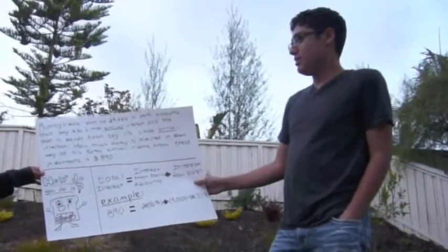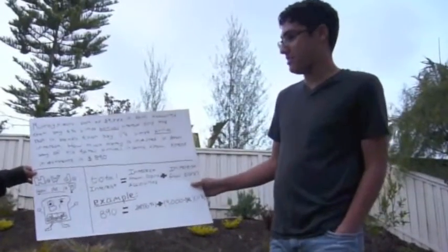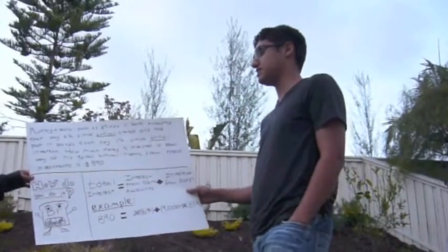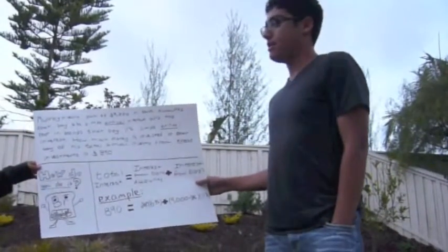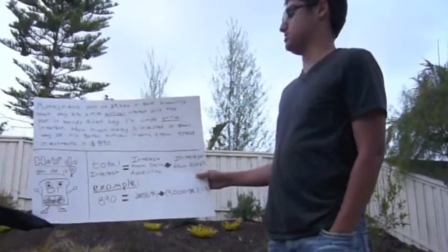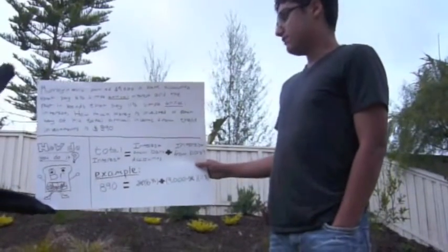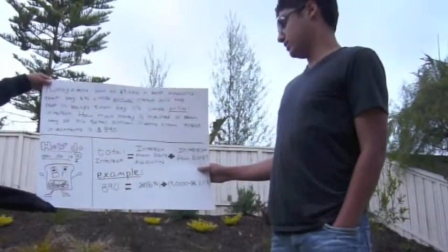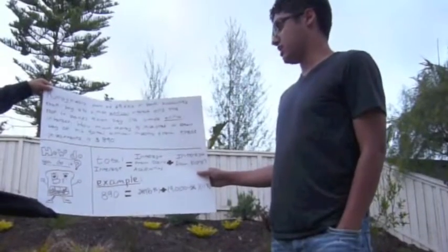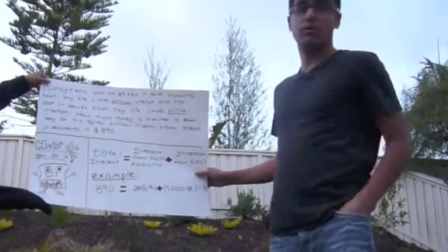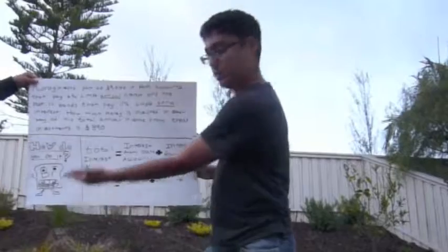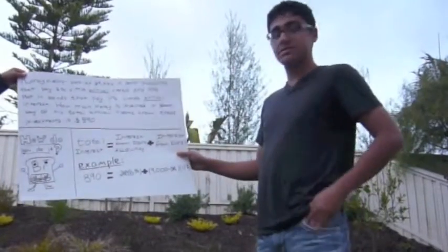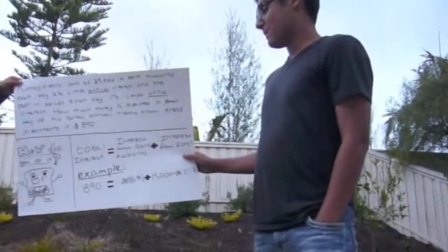Murray invests part of $9,000 in bank accounts that pay 6% simple annual interest, and the rest in bonds that pay 11% simple annual interest. How much is invested in each if his total annual income from these investments is $890?